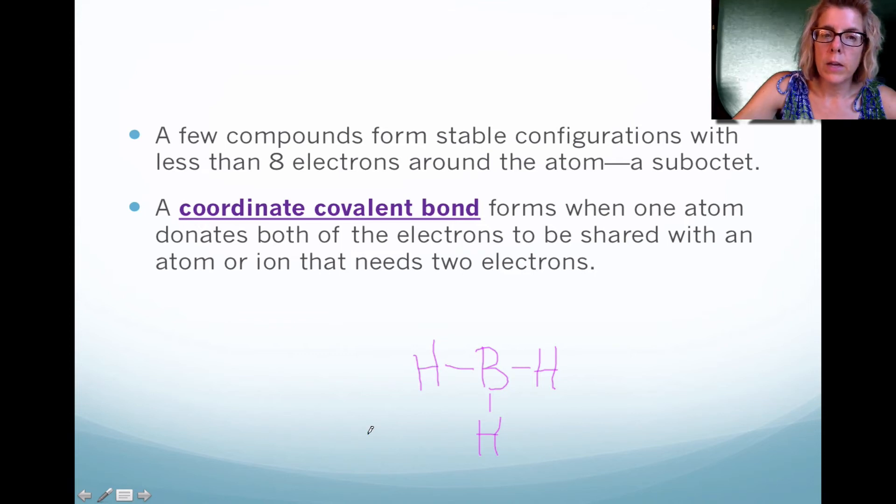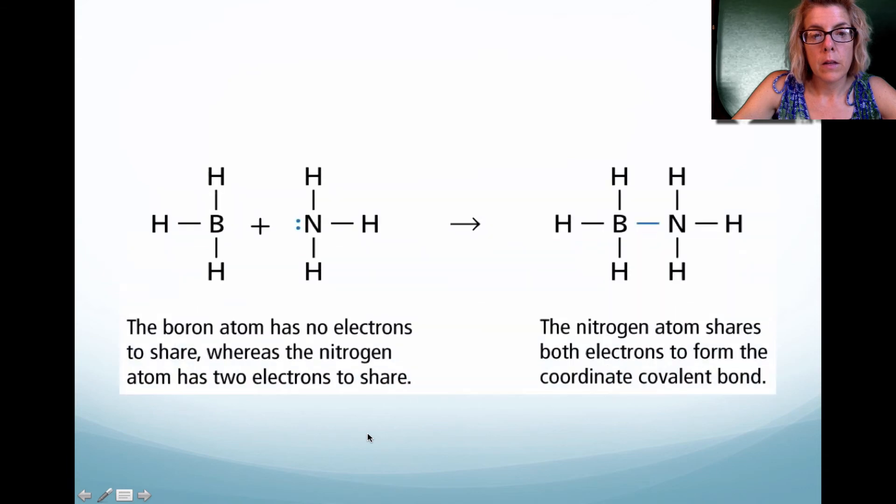In addition to that, we have what we call a coordinate covalent bond. I'm going to show you a slide with that where we have an atom that has non-bonding pair of electrons, and it will give its electrons to form a bond with another atom. Notice the boron trihydride on the left, which has a sub-octet, is going to form a covalent bond with nitrogen that happens to have two non-bonding electrons. Together, they form a single covalent bond. This is called a coordinate covalent bond.